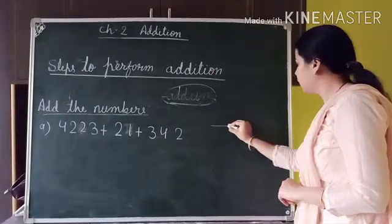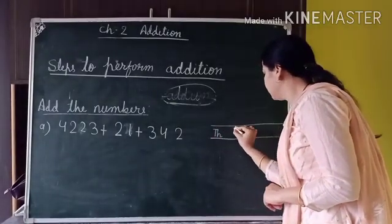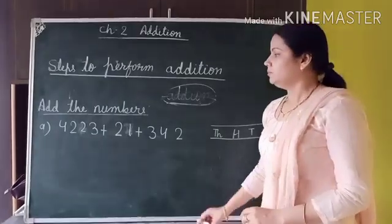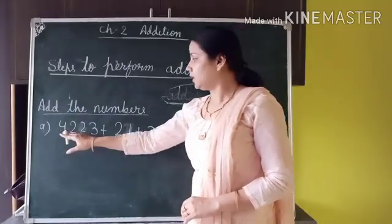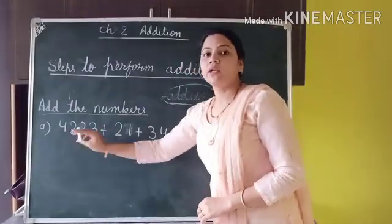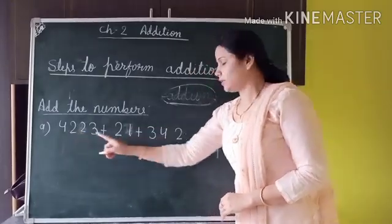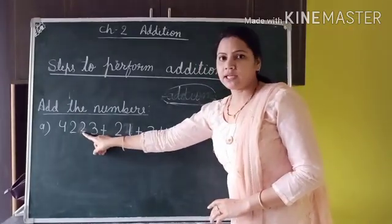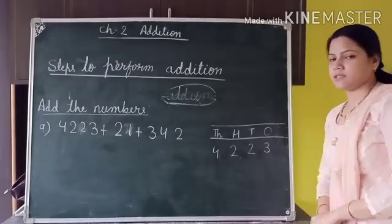We will make different columns: thousands, hundreds, tens, and ones. Taking the first number 4,223: 4 is in the thousands column, 2 is in the hundreds column, 2 is in the tens column, and 3 is in the ones column.